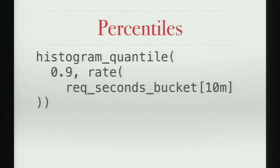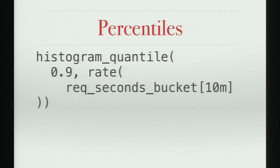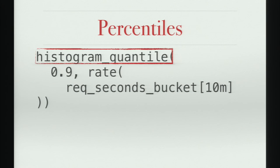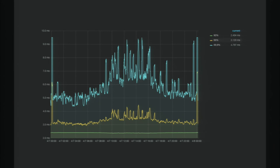For percentiles, Prometheus uses so-called phi quantiles, which oversimplified are percentiles divided by 100. So this is the 90th percentile — we take the rate of the buckets we just saw before, and histogram_quantile will do the rest. This gives us as many histograms as you have label combinations, so you may want to aggregate, but other than that we have our percentiles. PromQL is very powerful — you can even implement Conway's Game of Life in it.